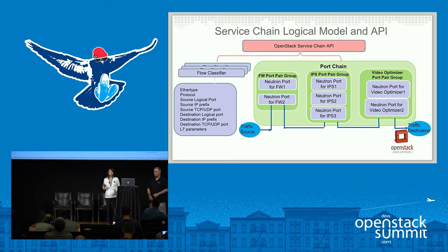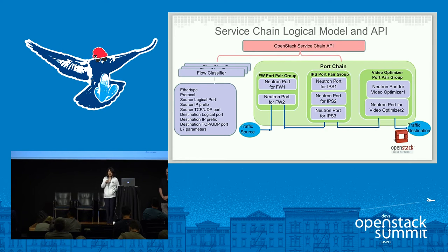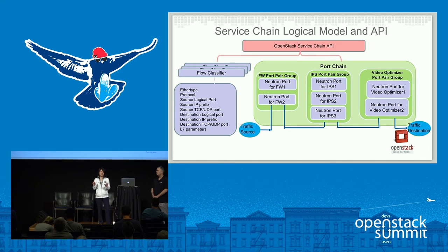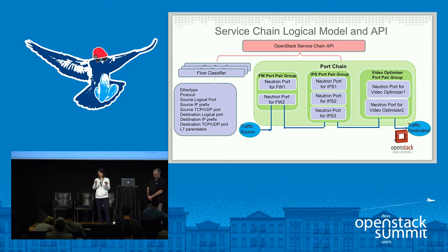This slide shows a service chain logical model and API. The service chain API consists of two parts. One part is the flow classifier and the other part is a port chain. The flow classifier specifies the classification rules used to classify a flow which will go through the chain. The port chain consists of an ordered sequence of service functions a specific flow will go through.